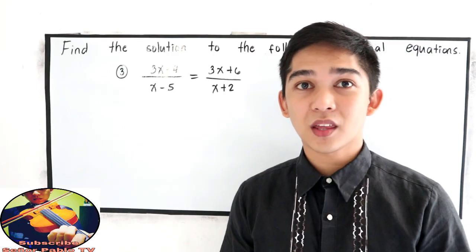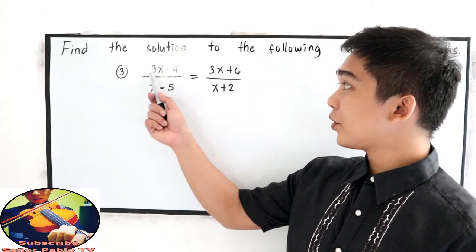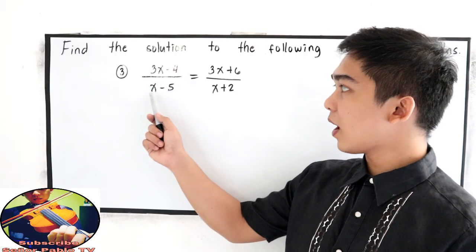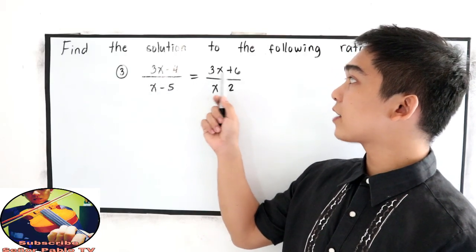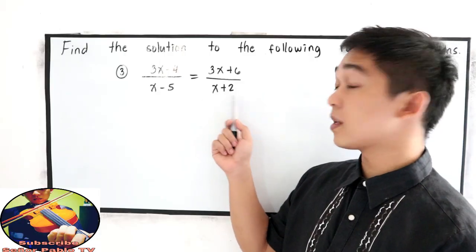Now, let us try number 3. 3x minus 4 over x minus 5 is equal to 3x plus 6 all over x plus 2.